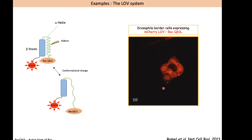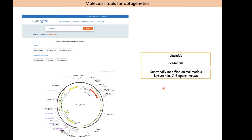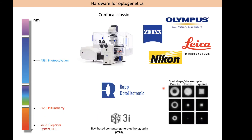This is again reversible — when illumination stops, Rac activation stops. All these optogenetic tools are mainly available from classical repositories as plasmids or lentiviruses, so you can transfect or infect your cells. There is also a whole set of genetically modified animal models expressing various optogenetic probes, such as Drosophila as shown, but also C. elegans and mouse. So optogenetics can be applied to a wide range of biological processes and model organisms.